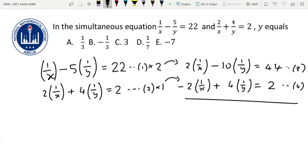That's equation 3 minus equation 4. So that will give us, I will expand it: we'll have 2(1/x) - 2(1/x), this second one is from the lower equation, then -10(1/y) - 4(1/y) = 44 - 2, which is 42.